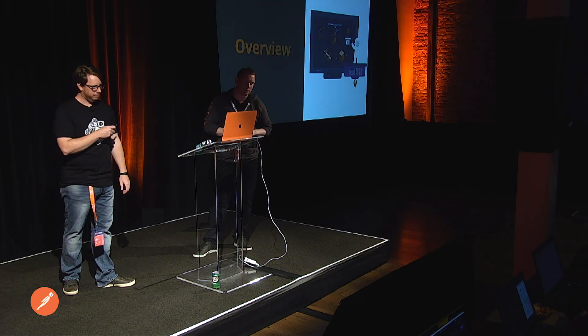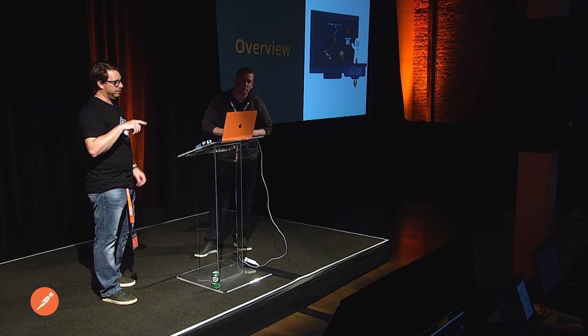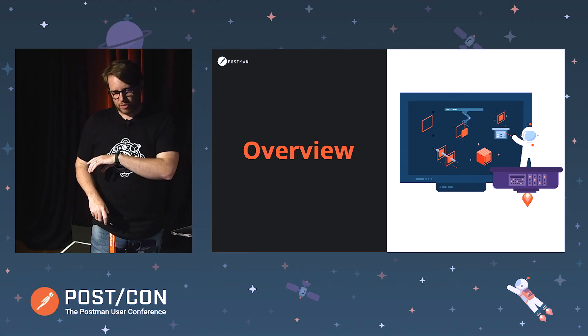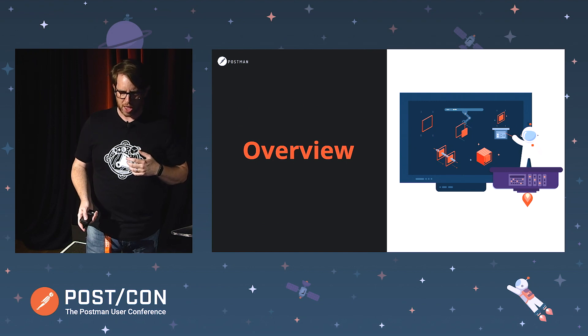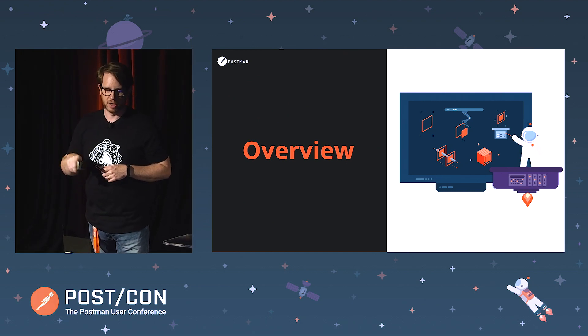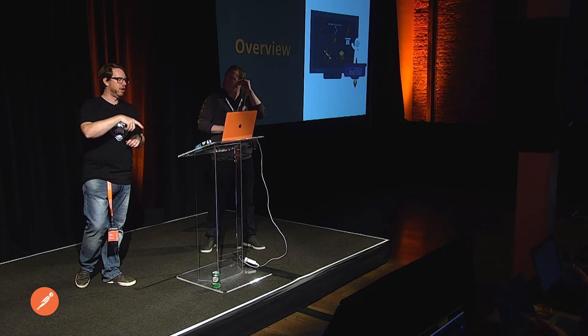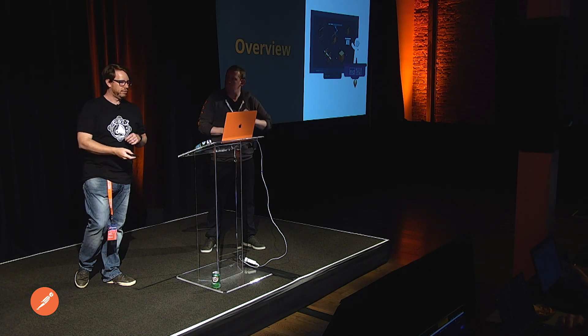Here's an overview of what we'll cover. We want to start by talking about the Collection Runner - what is it, what can you do with it. Then we're going to get into Newman, which some people came and talked to us about at the break. We'll talk about how you can use Newman for your automation and then CI/CD, which is something a lot of people want to know more about.